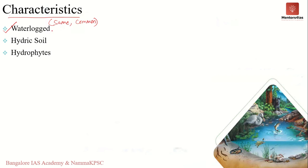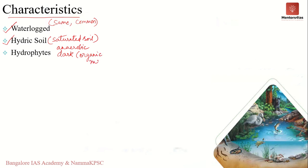The second characteristic feature is hydric soil — soil which is saturated with water, resulting in anaerobic conditions. Please remember: anaerobic conditions exist because the spaces between soil particles are occupied by water instead of oxygen. The hydric soil is also dark brown or black in color due to the presence of a lot of organic matter, and may also have a rotten egg smell due to the presence of sulfur in the soil.